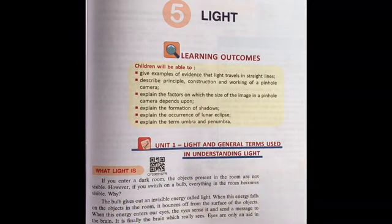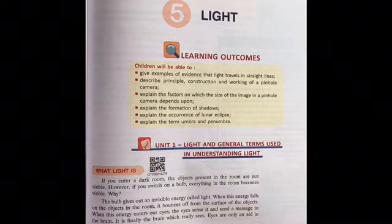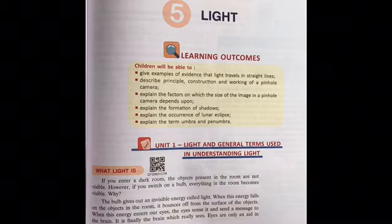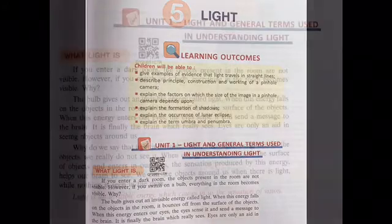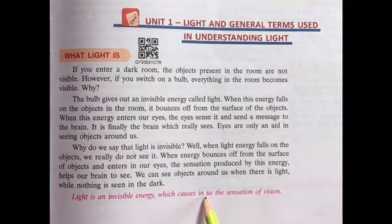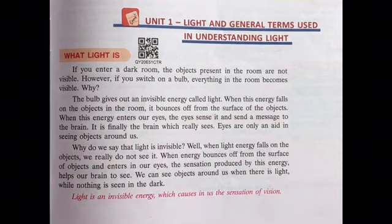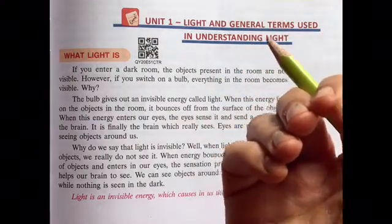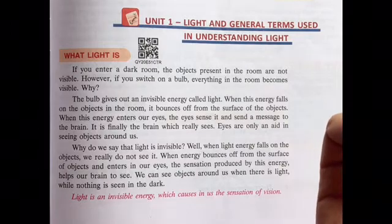What is light? Light is a very important part of our life. We cannot live without light. We cannot see without light. Whatever objects are present in our surrounding we can see them only because of light. It is very important for us. Light is an invisible energy which causes in us sensation of vision. It creates a visibility of different objects in our surrounding.